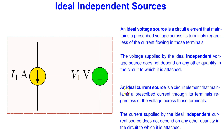Similarly, an ideal current source is a circuit element that maintains a prescribed current I1 through its terminals regardless of the voltage across those terminals. The term independent means that the current supplied by the ideal current source does not depend on any other quantity in the circuit.